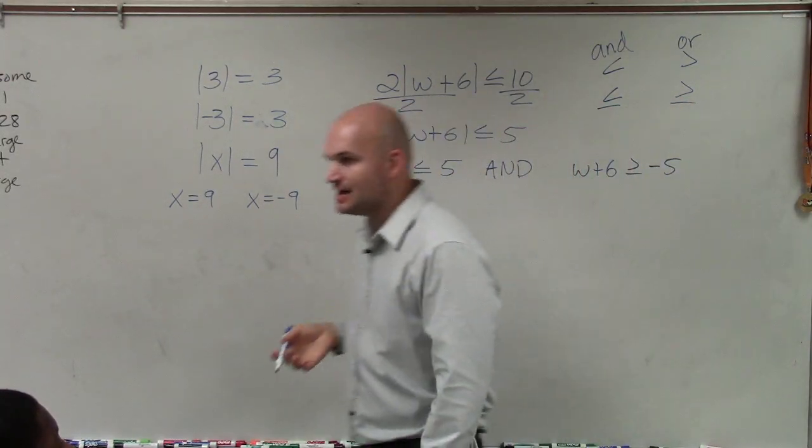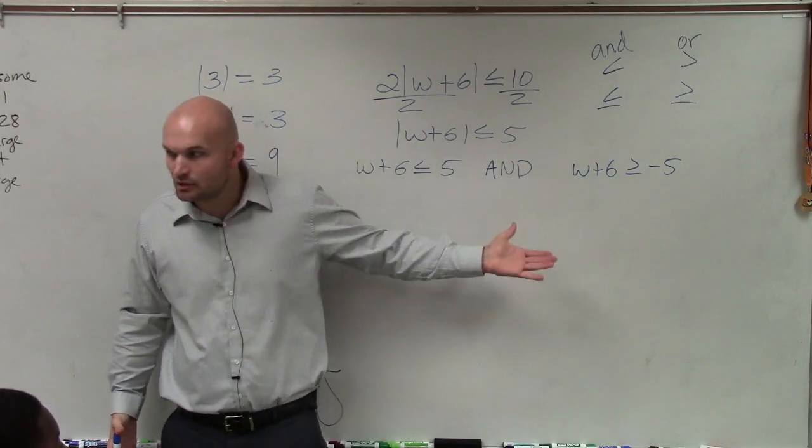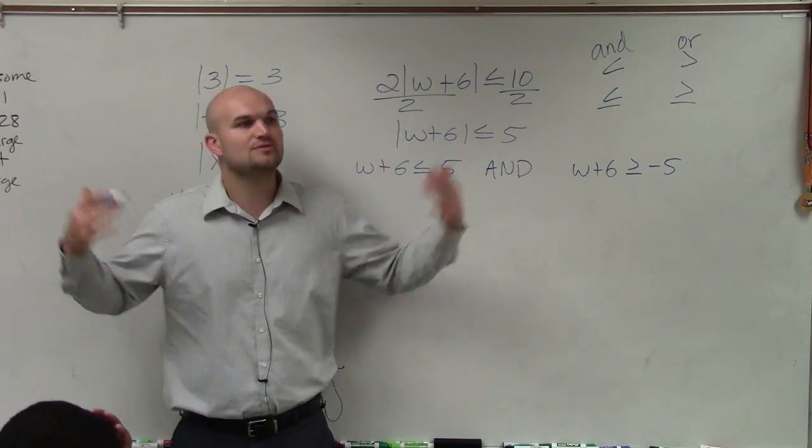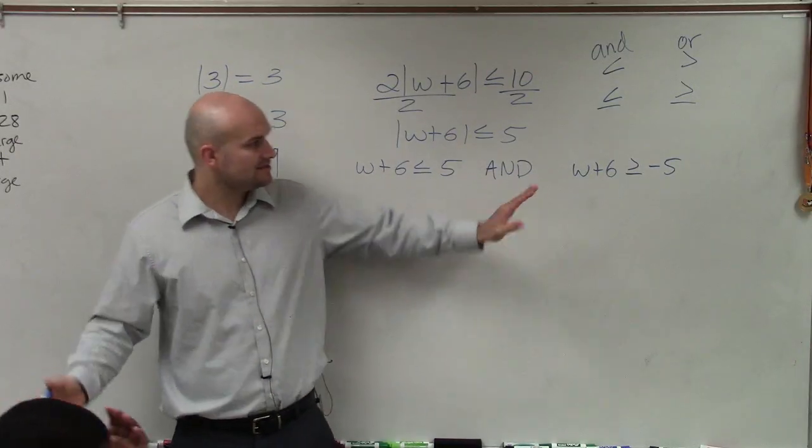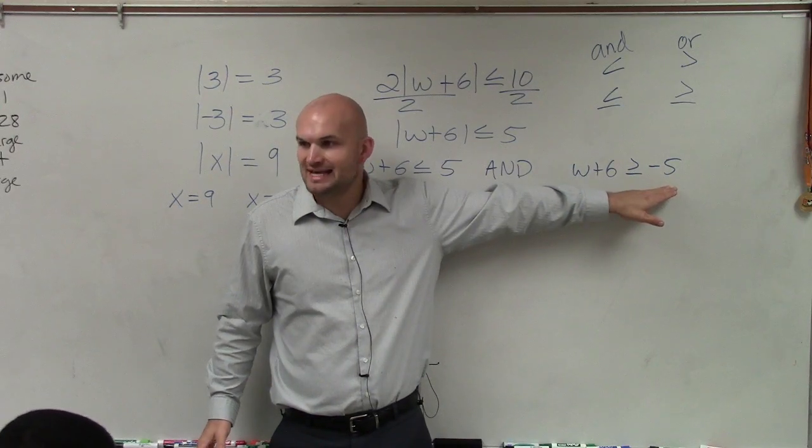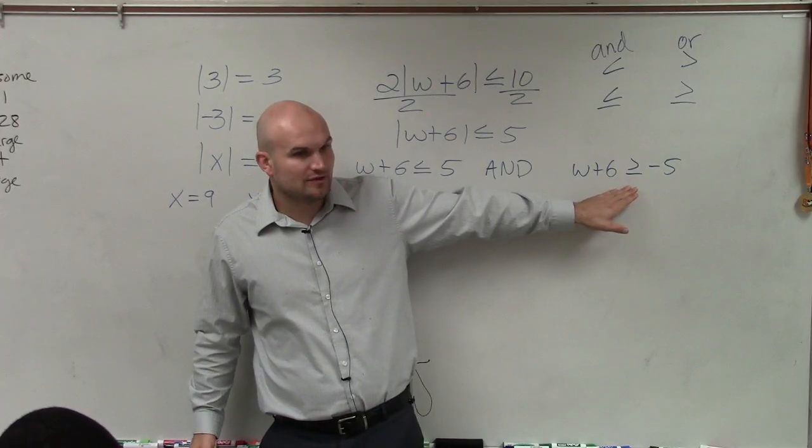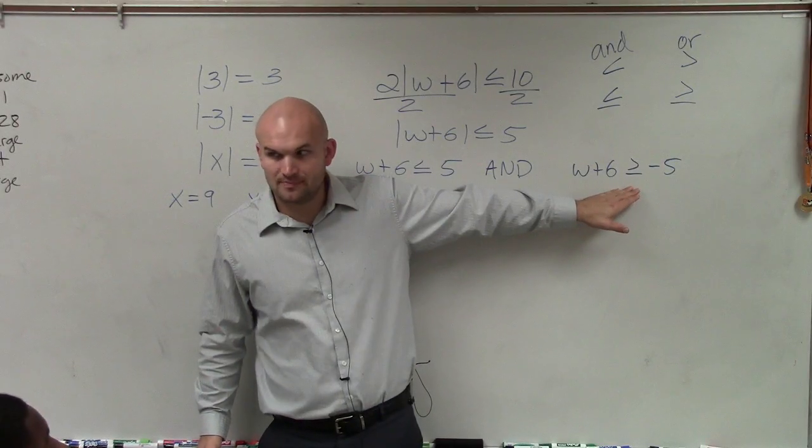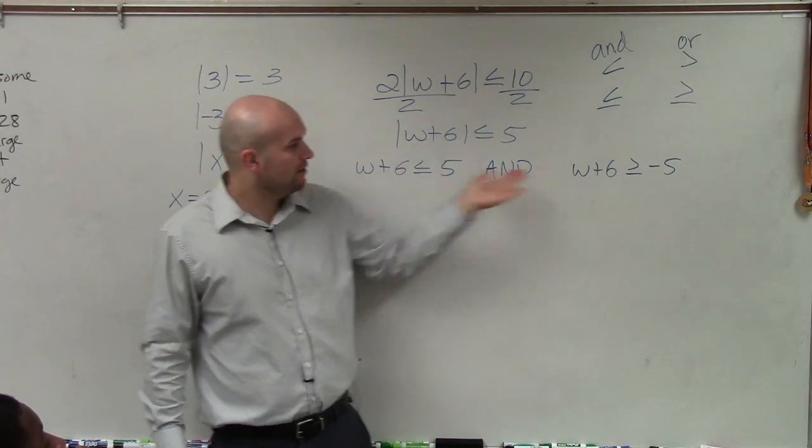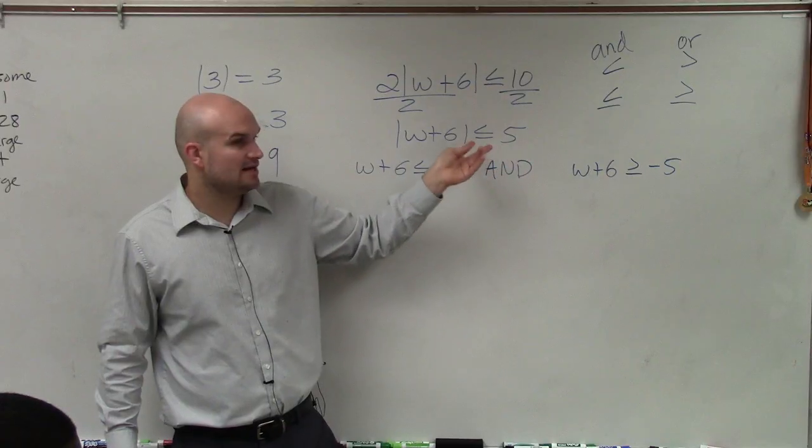So why did I flip the sign? Well, remember when we're solving inequalities, the only difference between solving inequality and equation is when you multiply or divide by a negative number, you have to flip the sign. So basically, ladies and gentlemen, what I did was I negated this right side. So since I negated the right side, I have to flip the sign. So basically, you're just rewriting the same equation, one as is, and then the other one, you negate the other side and flip the sign.